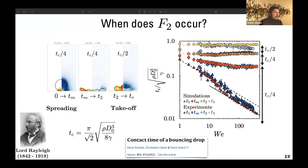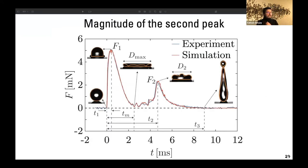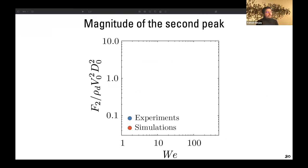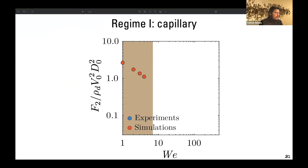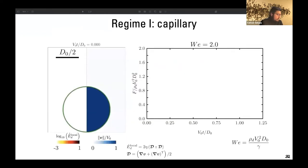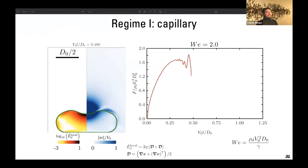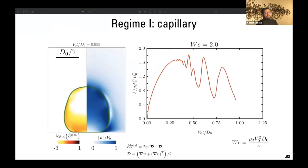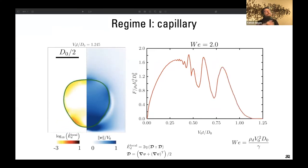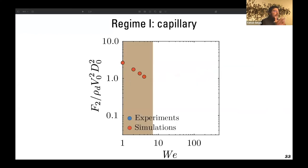So t₂ relates directly to the inertio-capillary time scale. Now what about the magnitude of the second peak F₂? In the low Weber number regime — the capillary regime — if we look at the impact process we see a first peak due to inertial shock, but then there are capillary oscillations that keep happening and there can be more than two peaks. For example, at low Weber numbers there can be five local maxima, which are essentially different capillary oscillations.